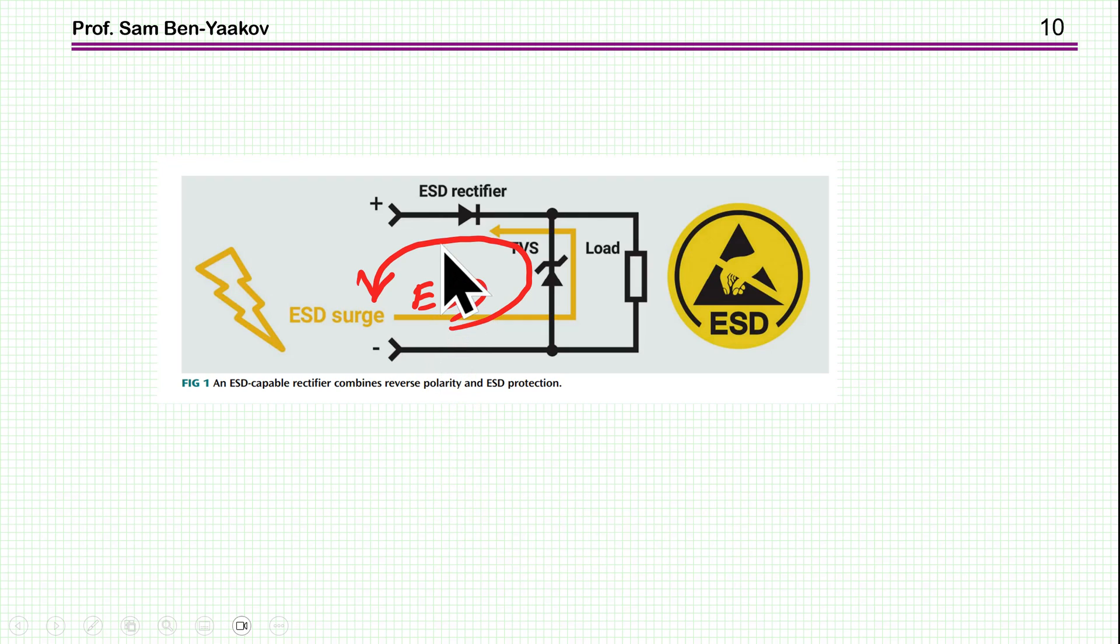So what will happen if we have this rectifier, ESD-capable rectifier? Now, if we are going to have an ESD in this direction, well, in the forward direction, it doesn't do anything because it's like a forward diode. And if there is an ESD, then the TVS will protect. But if the ESD current is in this direction, then this rectifier is supposed to be capable of withholding this current.